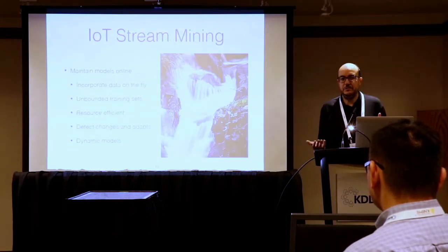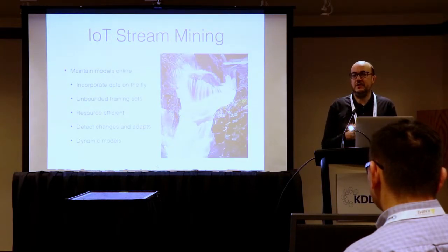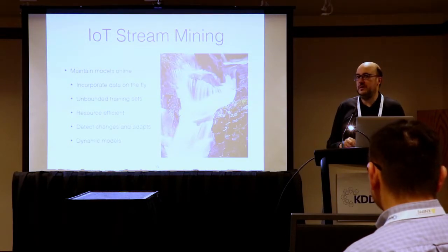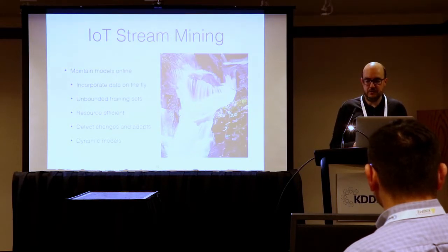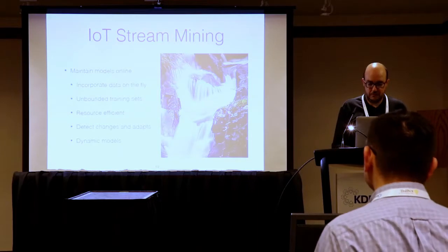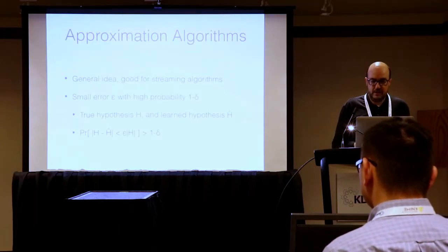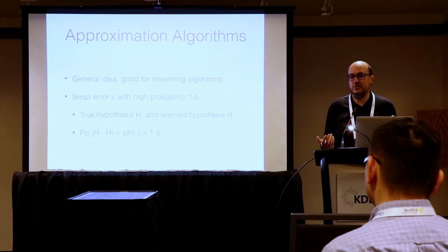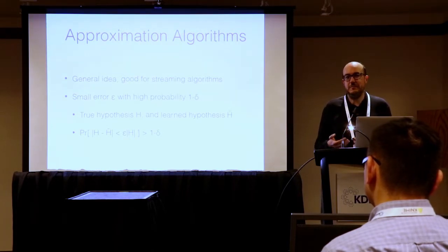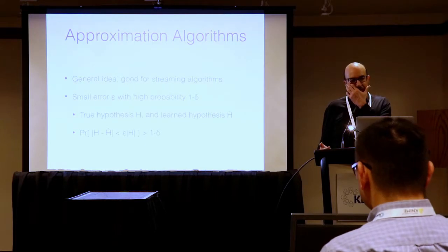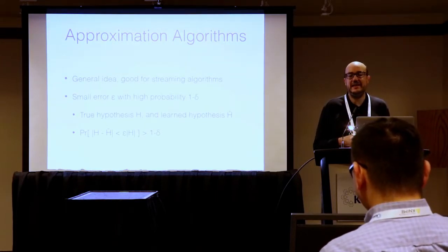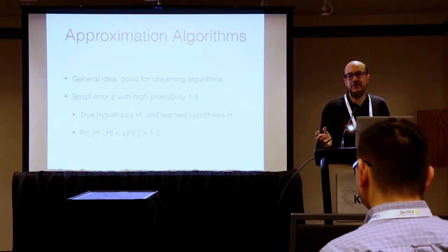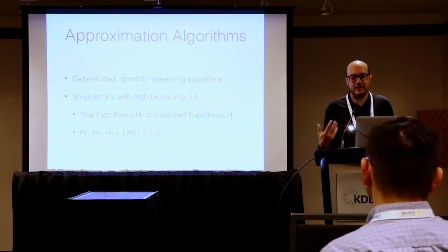The IoT stream mining setting assumes restrictions of time and memory — we see data only once, we don't store it, and we must detect and adapt to changes. Sometimes we would like exact solutions, but with huge quantities of data, exact solutions may take too much time. Having an approximate solution with only 1% error that can be computed in seconds is preferable in streaming. We are therefore interested in approximation algorithms that give solutions with small error epsilon and high probability 1 minus delta.